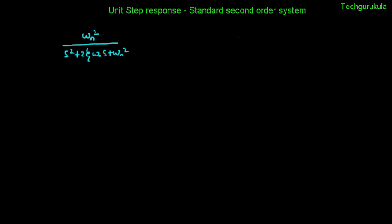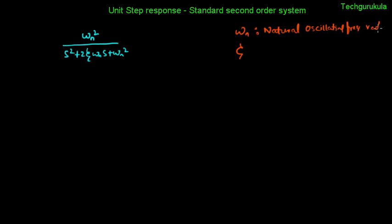We have two parameters: omega_n, called the natural oscillating frequency, measured in radians per second, and zeta, called the damping factor or damping ratio. Since it is a ratio, it has no units.